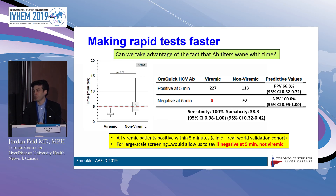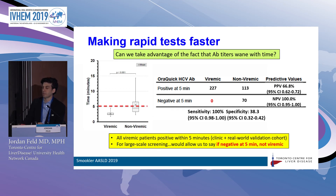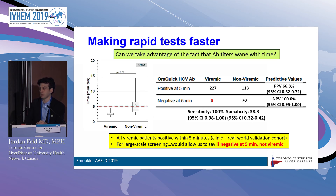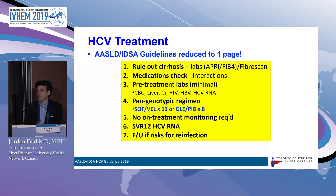Some simple things we can do involve making existing tools more useful, and this is work we've done as an example. We looked at using the OraQuick point-of-care antibody test and whether antibody titers — which tend to wane after someone clears infection — might be higher in people with active viremia. Sure enough, that was true: viremic patients were all positive within five minutes (versus the labeled read time of 20–40 minutes). Testing 227 viremic patients showed all were positive at five minutes, while no viremic patient was negative at five minutes. This allows a five-minute read time — if someone's negative at that point, they likely don't have active virus, speeding up the process considerably.